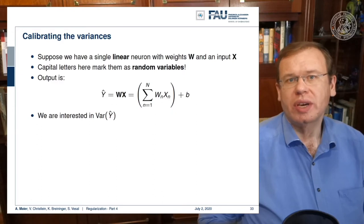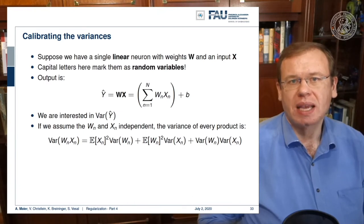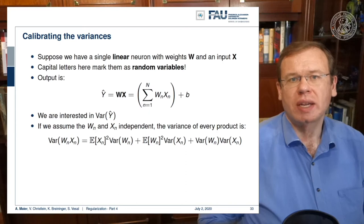Now we are interested in the variance of Y hat. If we assume that W and X are independent, then the variance of every product can actually be computed as the expected value of X to the power of 2 times the variance of W plus the expected value of W to the power of 2 times the variance of X. And then you add the variances of the two random variables.